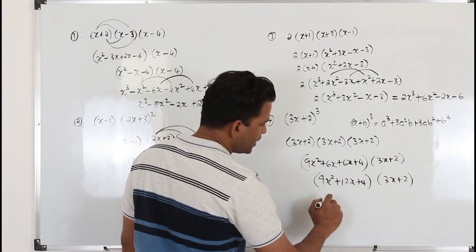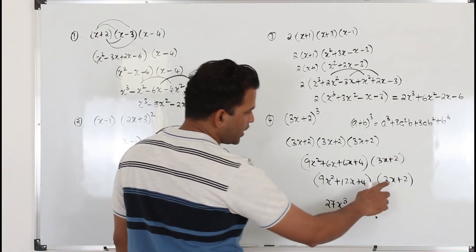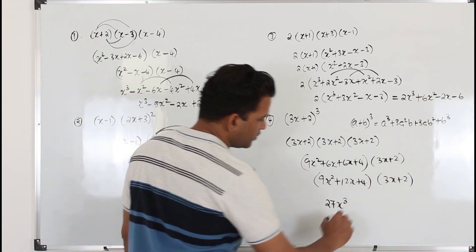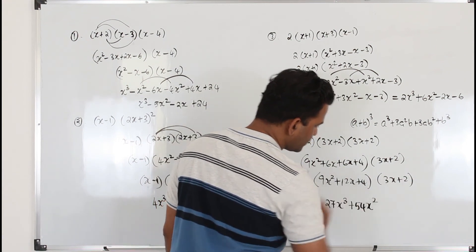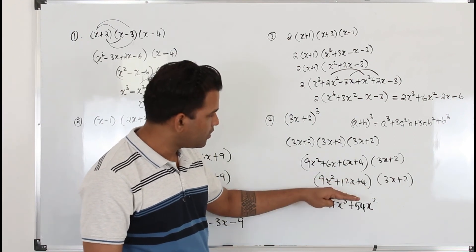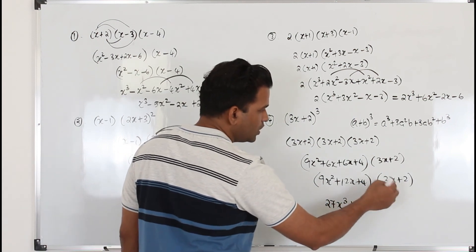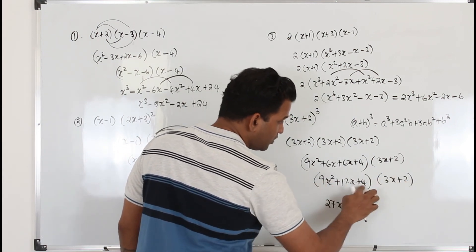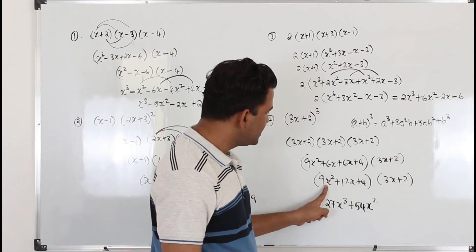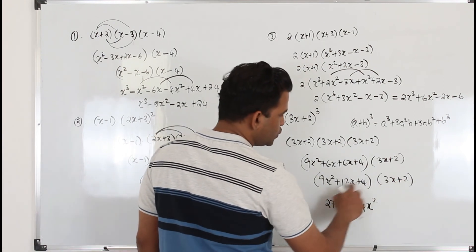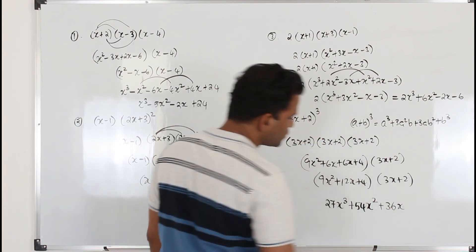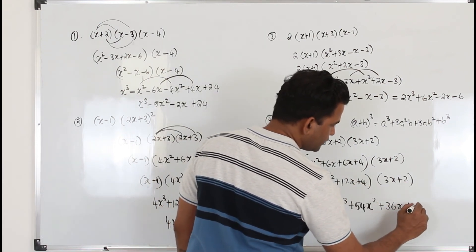The final answer will be 27x cube. For x square: 36x square plus 18x square is 54x square. For x: 24x plus 12x is 36x. And 2 times 4 is 8. So the final answer is 27x cube plus 54x square plus 36x plus 8.